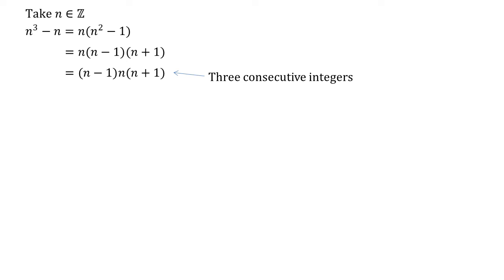So these are three consecutive integers. Now we can see that if you've got three consecutive numbers, at least one of them must be a multiple of 2 and one of them is going to be a multiple of 3. If something is a multiple of both 2 and 3, it must also be a multiple of 6, which would solve our problem. So let's look at this more formally.